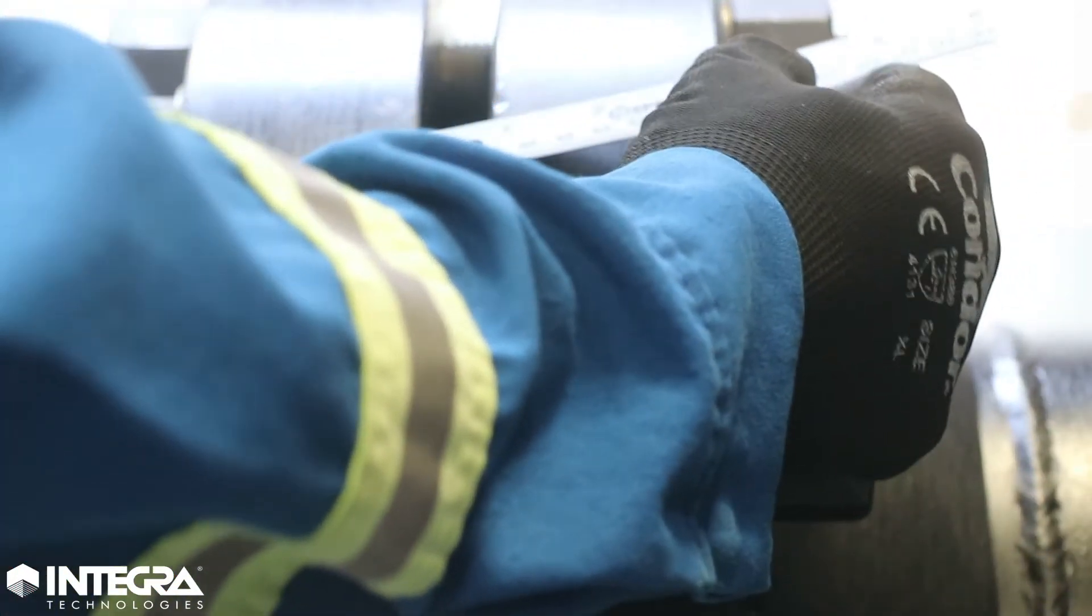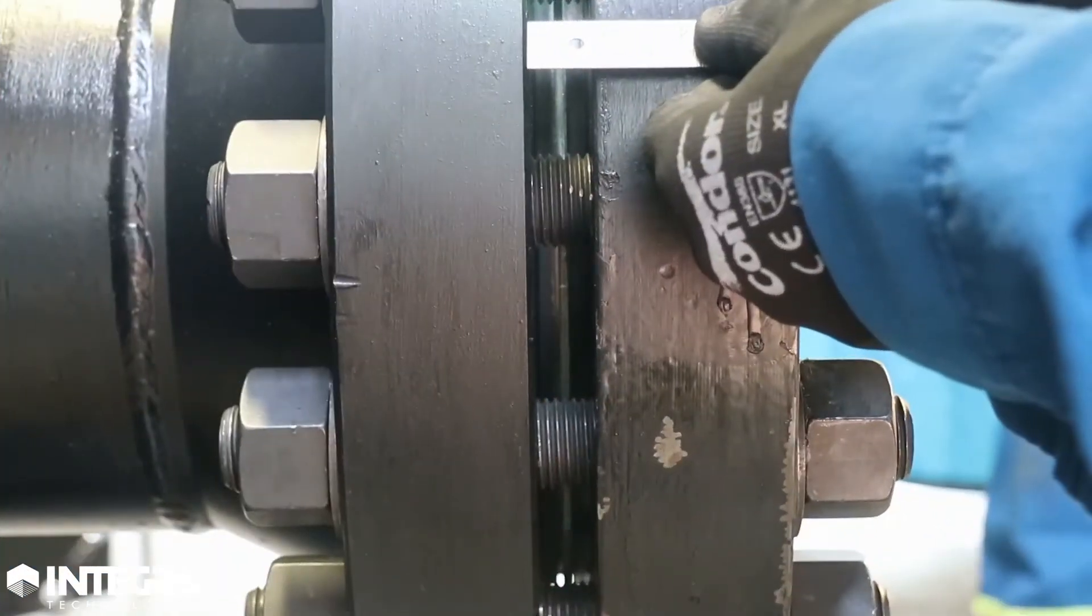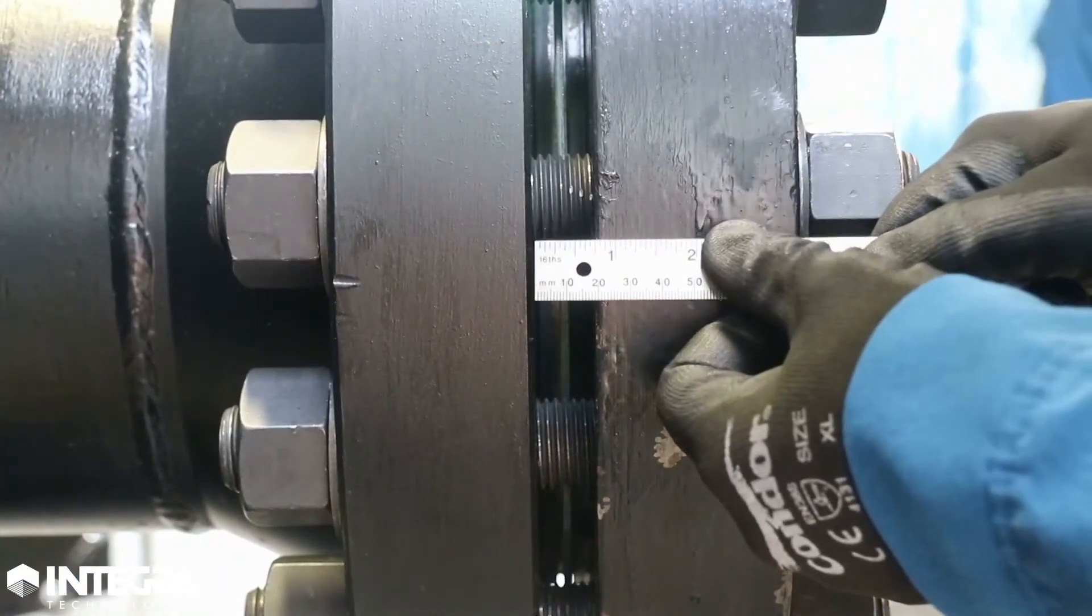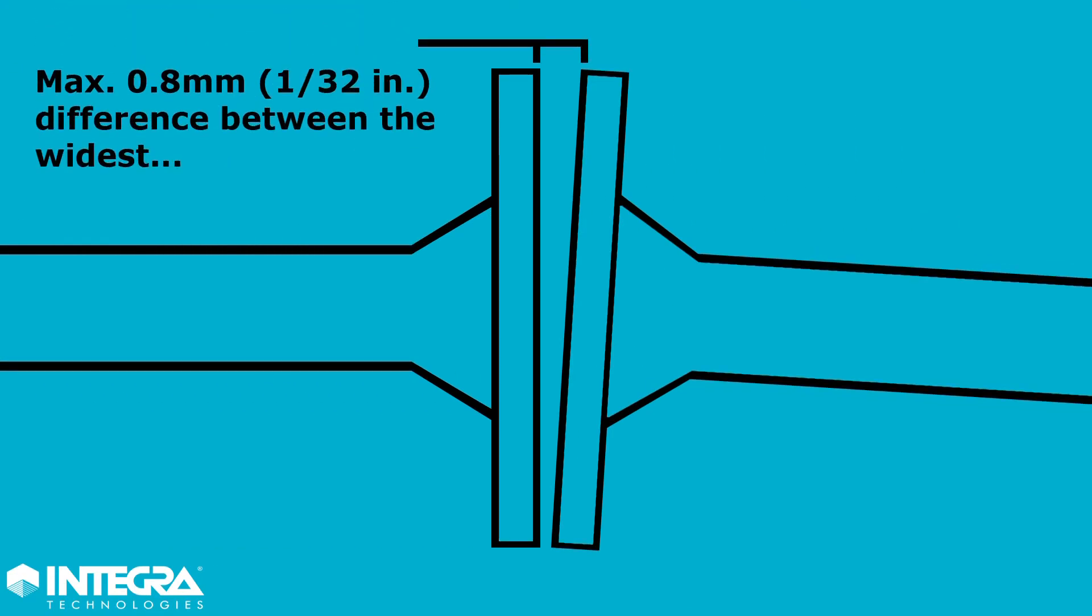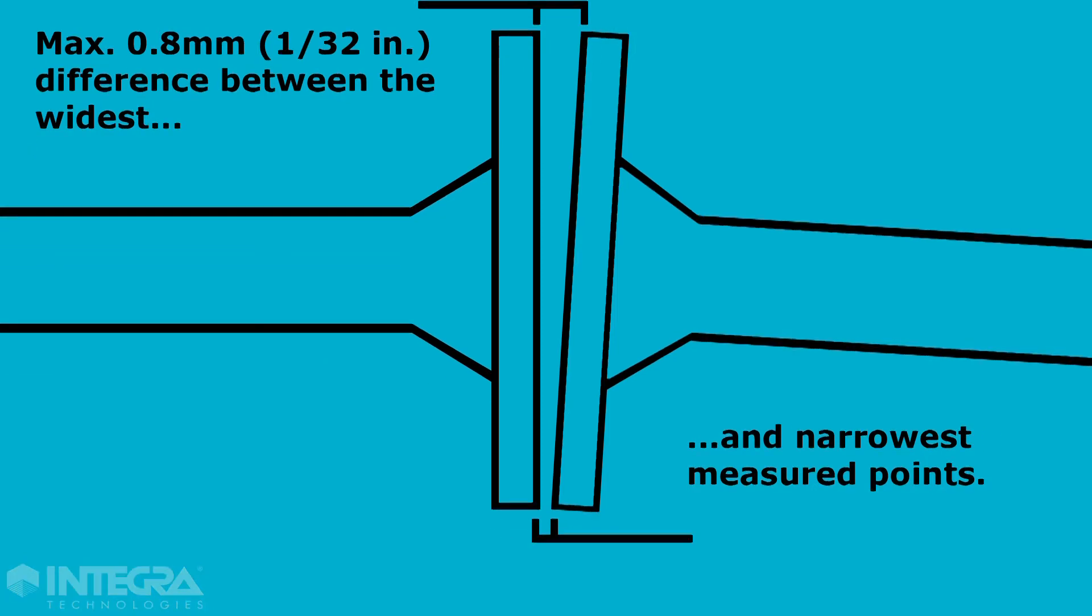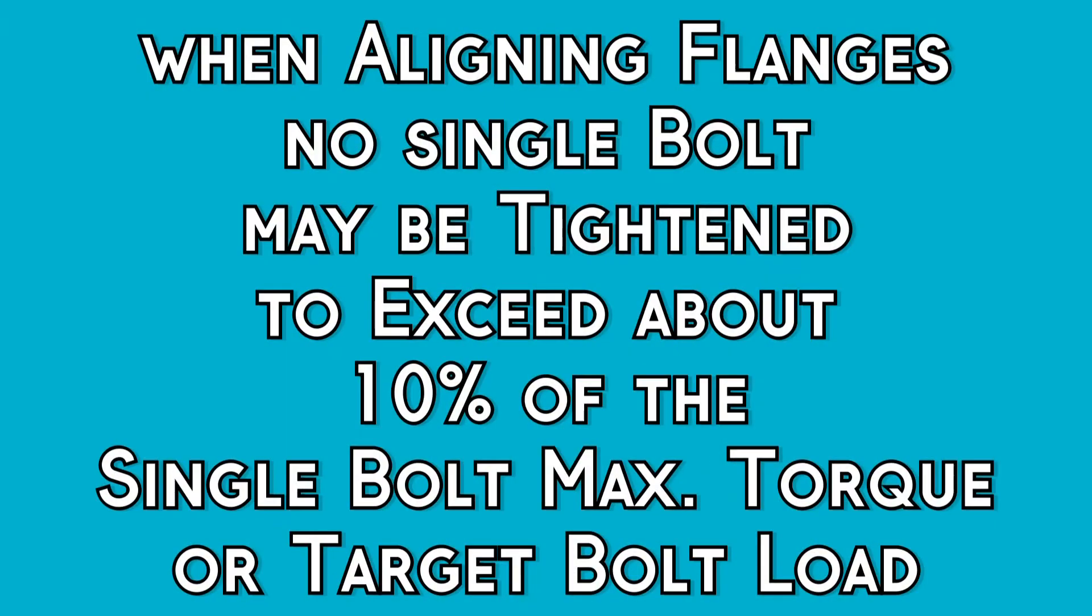The tolerance is usually determined by measuring the closest and farthest distance between the flange faces and comparing. An acceptable practice is a difference of no greater than 0.8mm, or 1/32nd of an inch, at the outer diameter of the sealing surface, achieved using a force of no greater than 10% of the maximum torque, or bolt load, for any bolt.